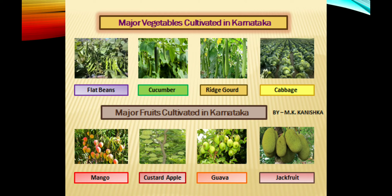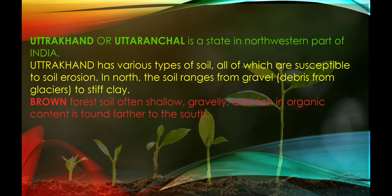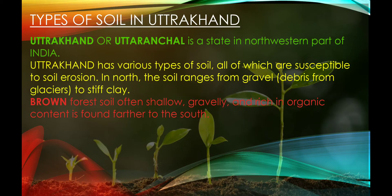Type of soil in Uttarakhand: Uttarakhand, located in the north-western part of India, has various types of soils, all of which are susceptible to soil erosion. In the north, the soil ranges from gravel debris from glaciers to stiff clay. Brown forest soil — often shallow, gravelly, and rich in organic content — is found further to the south.